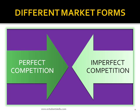The determination of prices and outputs of various products depends upon the market form in which they are produced, sold and purchased. Economists have classified the various markets prevailing into: 1. Perfect competition, 2. Monopolistic competition, 3. Oligopoly, 4. Monopoly.